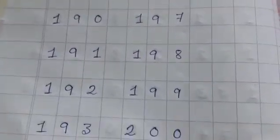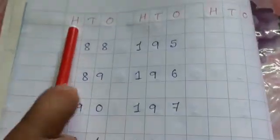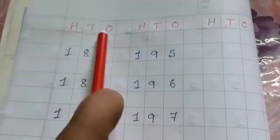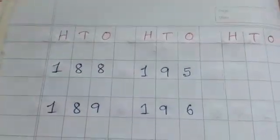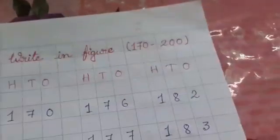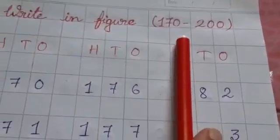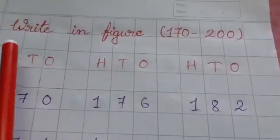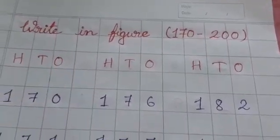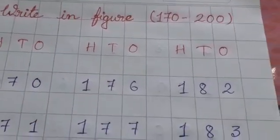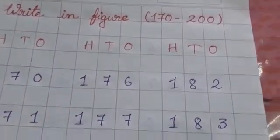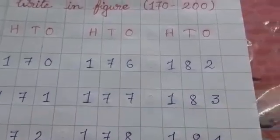So children, what have we learned? That whenever we are writing, first we will be writing the HTO. That is the ones, tens and hundreds on top. And also, we will write, write in figure. That is the heading on top. Then you will write the HTO. After that, you will continue your writing like this. And as you can see, I have given one line gap here. Here also, one line gap. So, write it beautifully. Keep it neat and clean.